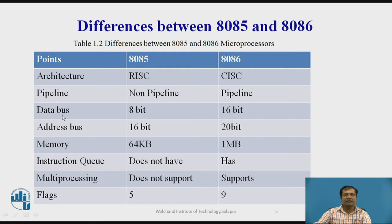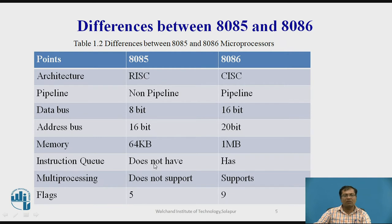Regarding the data bus, the 8085 has an 8-bit data bus while the 8086 has a 16-bit data bus. Regarding the address bus, the 8085 supports a 16-bit address bus and the 8086 supports a 20-bit address bus. Regarding memory, the 8085 supports 64 KB and the 8086 supports 1 MB. The 8085 does not have an instruction queue, but the 8086 has an instruction queue with a length of 6 bytes.